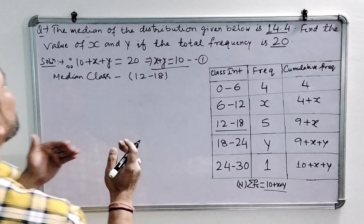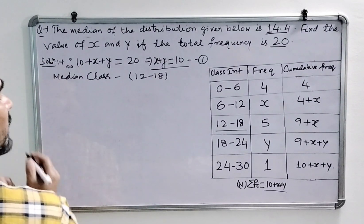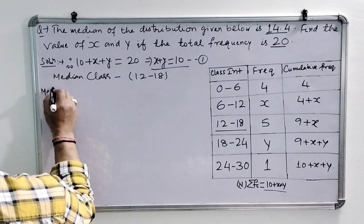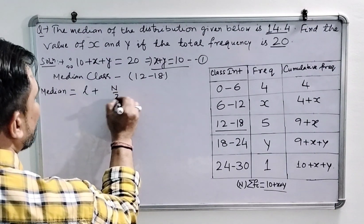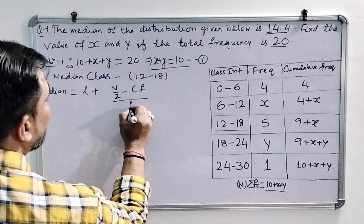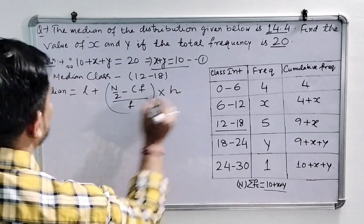Now we have to find the value of x and y. For that, we will use the formula to find the median. So median is L plus N upon 2 minus cumulative frequency upon frequency into h.